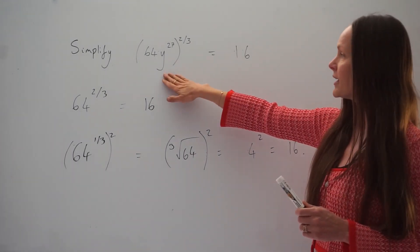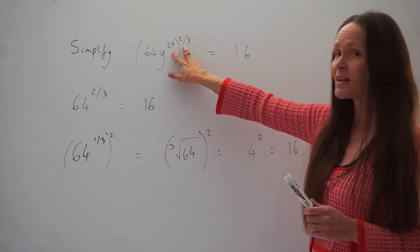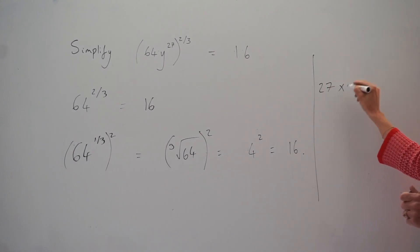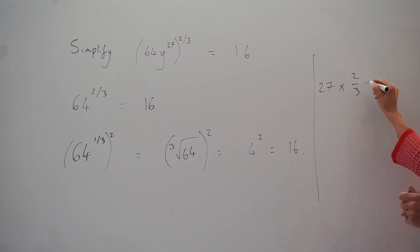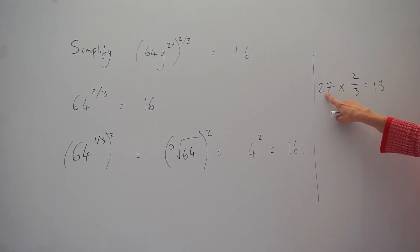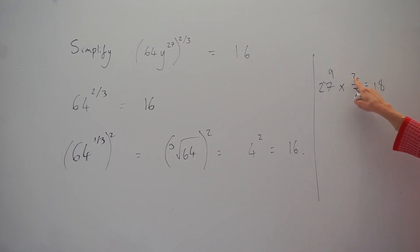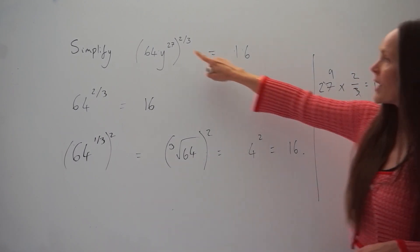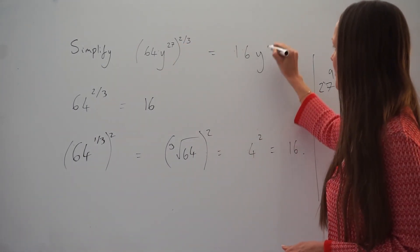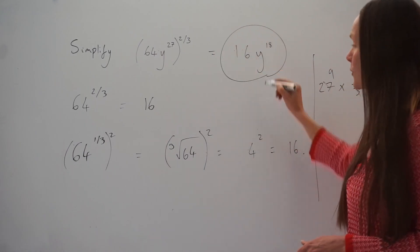Now looking at the letter y, we're multiplying the powers together. So we have to multiply 27 by 2 thirds. With a calculator that gives you 18. Or without a calculator, you can simplify: 27 divided by 3 is 9, and 9 multiplied by 2 is 18. So when you times these powers together you get 18, giving y to the power of 18. That is the final answer.